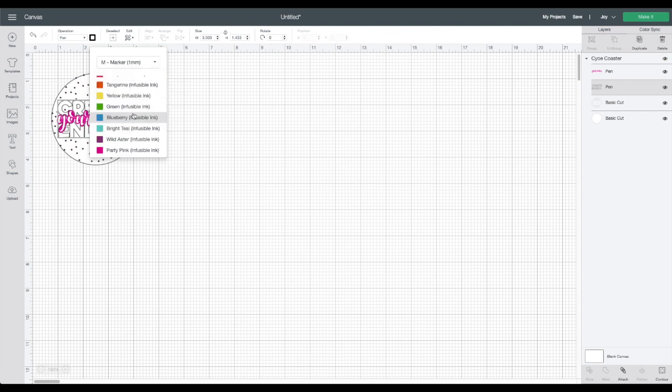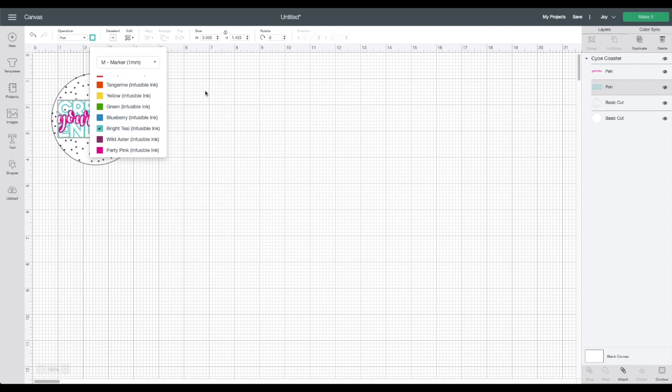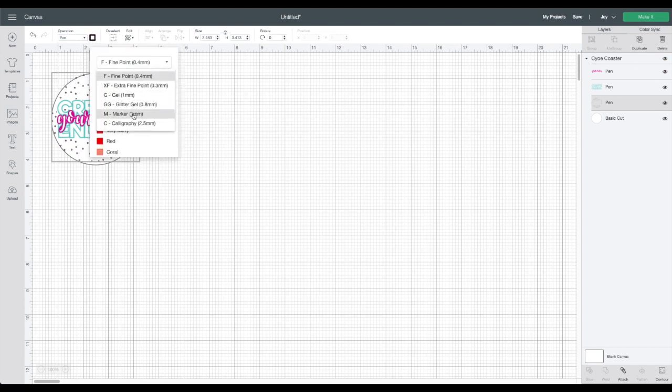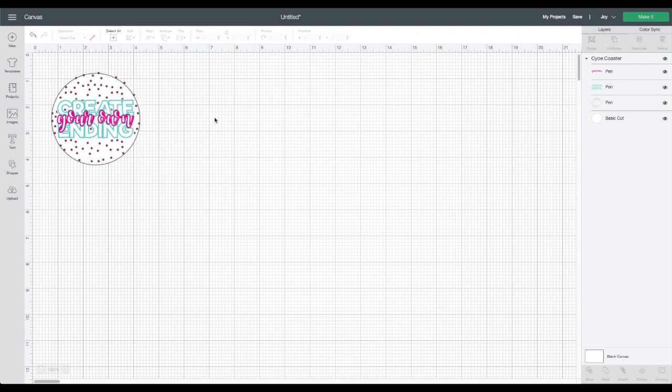The next one is going to be bright teal, and then finally I am going to choose wild aster. You don't have to choose the exact colors, it just makes it much easier I think for when you're changing out the markers to be able to actually grab the marker in which you selected.